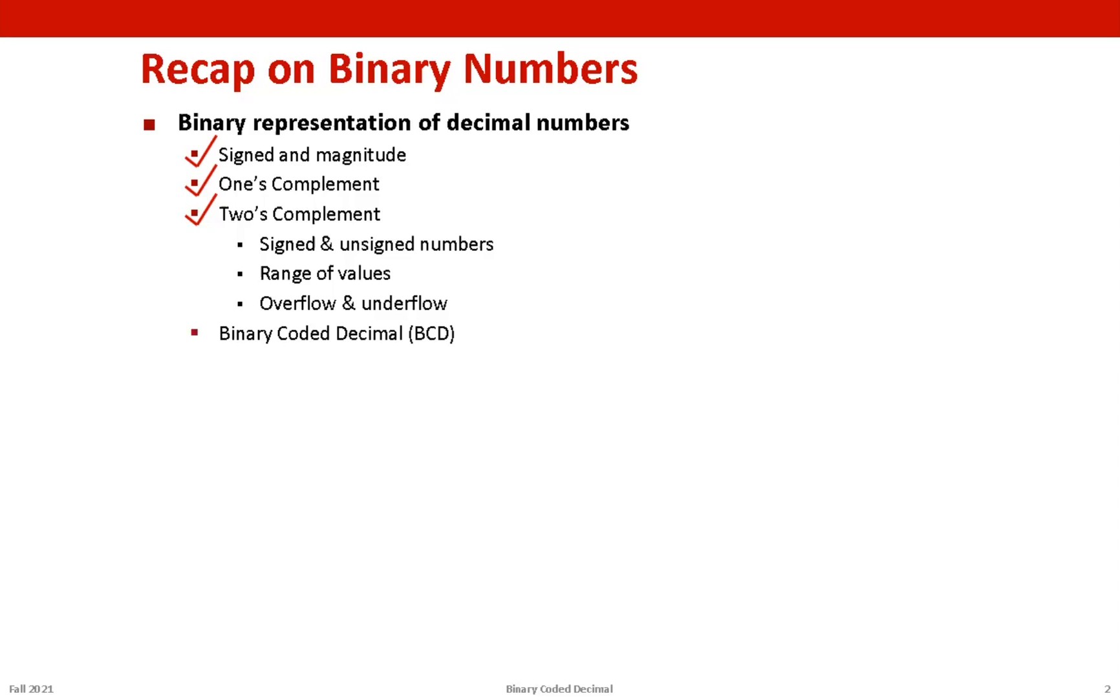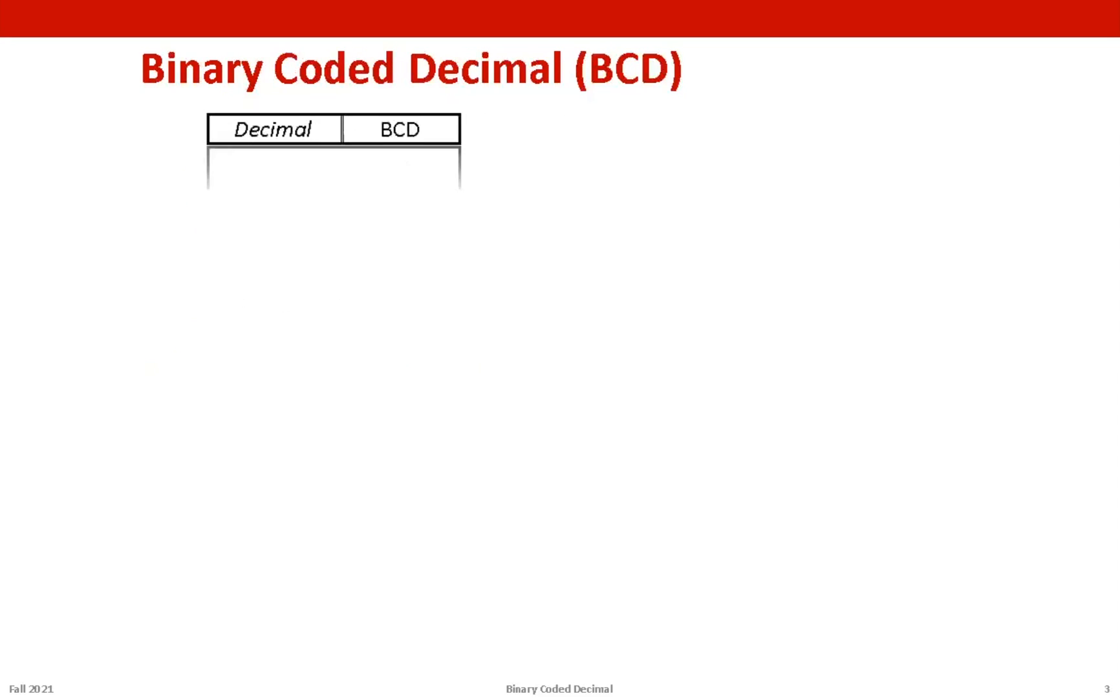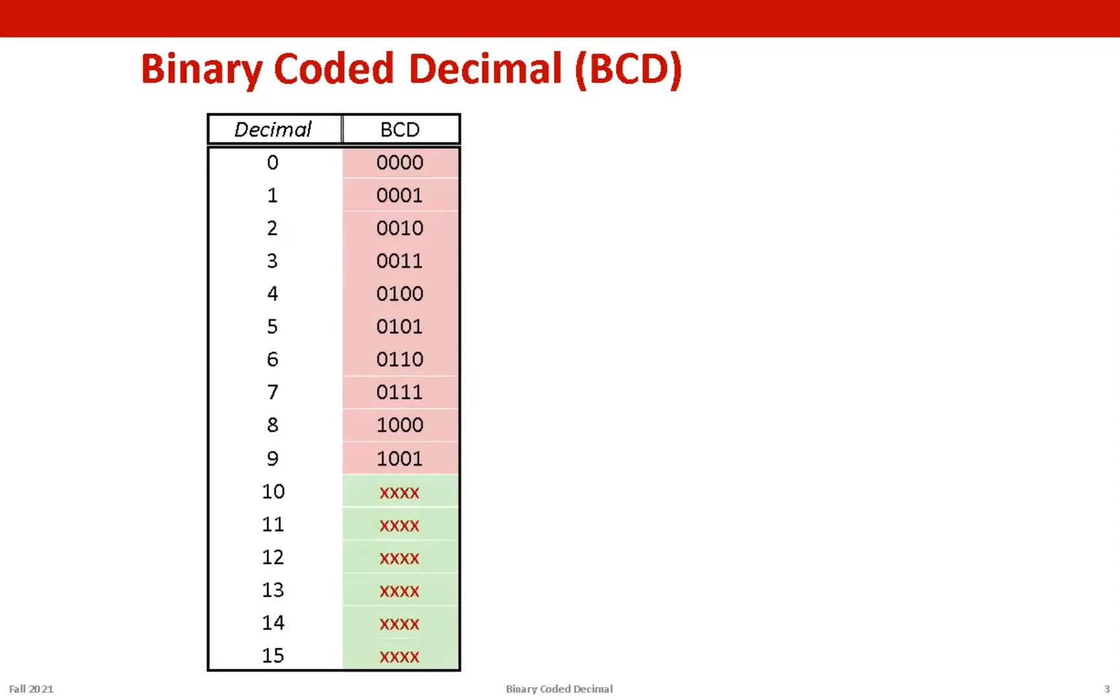In this video we are going to look into the Binary Coded Decimal system of representing a decimal number. So let's begin. Let us fill this table with what we already know. These are the decimal digits and on the right side we have their respective binary patterns. These sequences are the legal binary patterns that can be used in our BCD representation. What about these values that are above nine, that is 10 till 15? Actually these are not decimal digits because decimal digits can only be from zero to nine. These are decimal numbers composed of two decimal digits, and hence we don't care about their corresponding binary pattern. This is one of the drawbacks of BCD binary representation because we are wasting patterns.